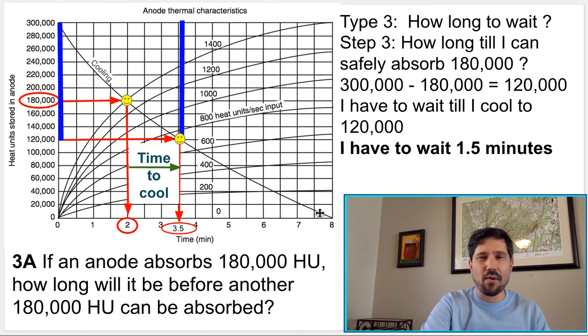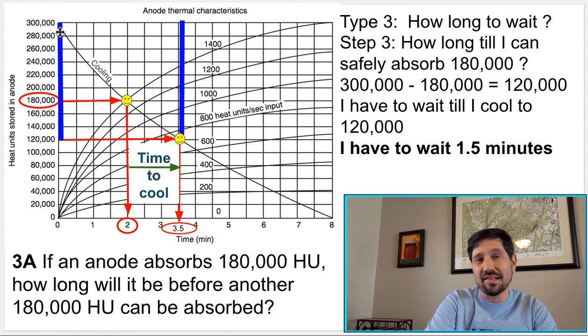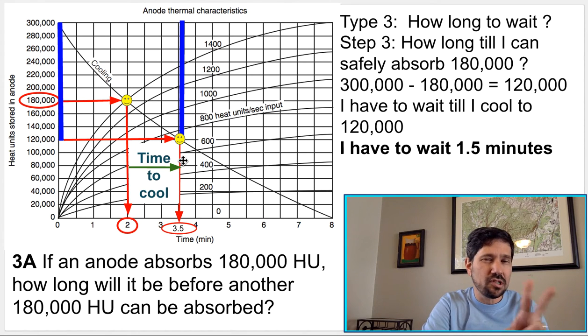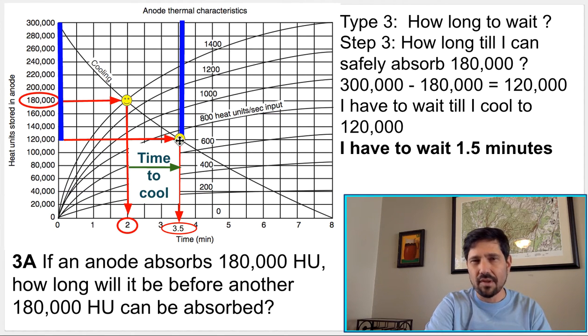That's how you do those. So again, we're not waiting to cool completely, which would be out here at eight minutes. We didn't give you the maximum load. That would have been 300,000. We gave you two shots that exceeded the maximum. So the first shot you took was here. Then you have to wait to cool down until you're at least cool enough to have enough headroom to take that second shot of 180,000 without overheating.